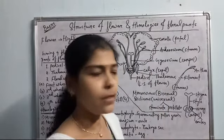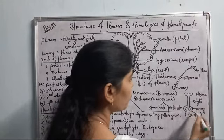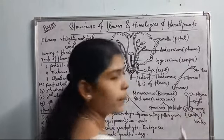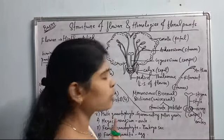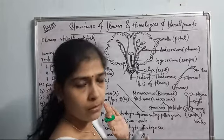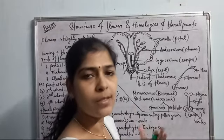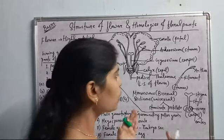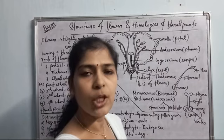After fertilization, the ovary changes into a fruit and all other floral parts dehisce. The ovary wall changes into the fruit wall or pericarp. This is all about the fundamental discussion of floral parts and how the flower acts as the reproductive organ in flowering plants.